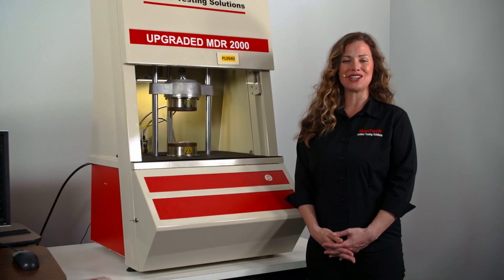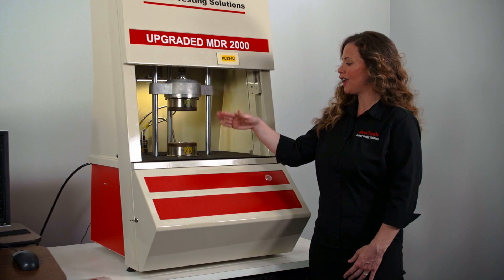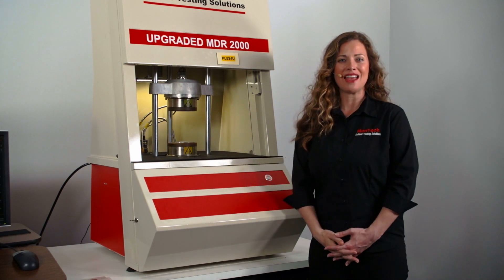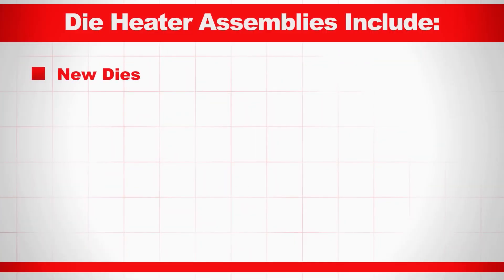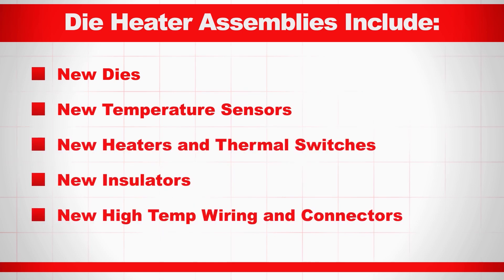Next, we install new die heater assemblies in both the upper and lower platens. This includes new dies, temperature sensors, heaters, thermal switches, insulators, high-temper heater wiring, and connectors.